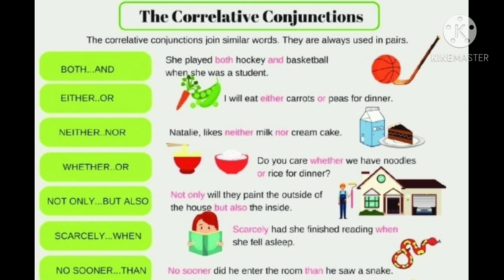Moving to the third kind of conjunction, that is correlative conjunctions. Correlative conjunctions join similar words and are always used in pairs. Examples: both...and, either...or, neither...nor, whether...or, not only...but also, scarcely...when, no sooner...than. There are more examples given in your book.